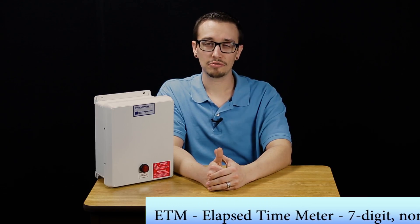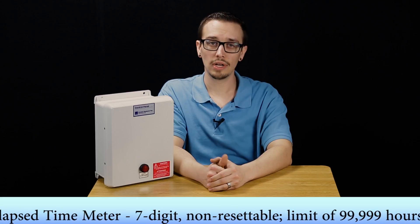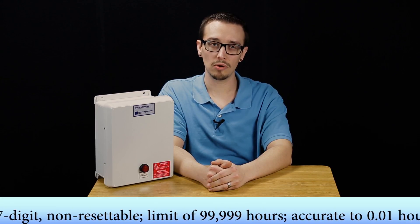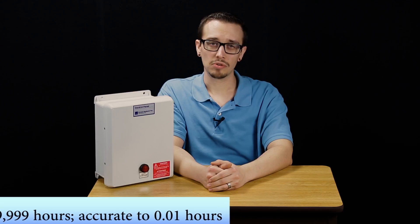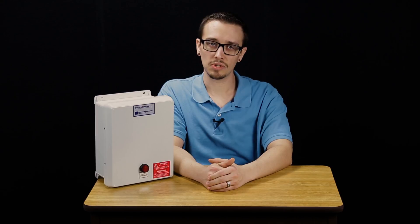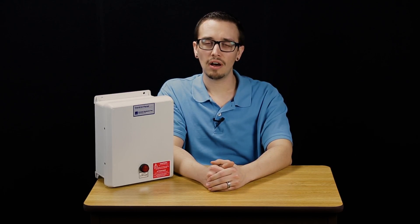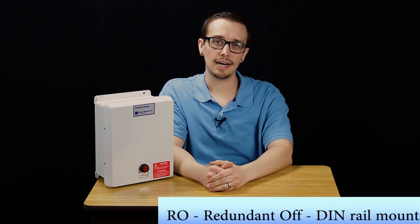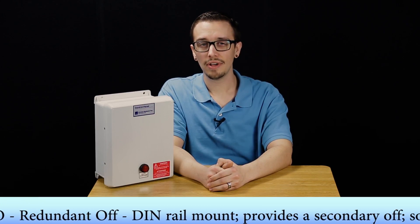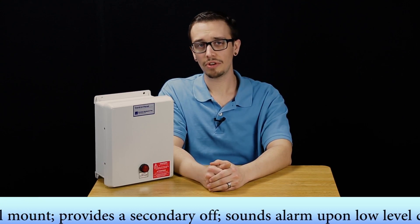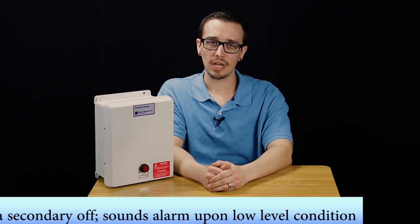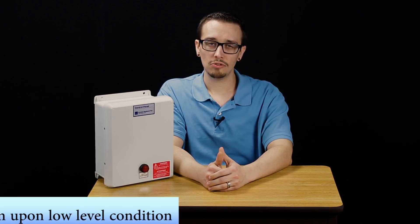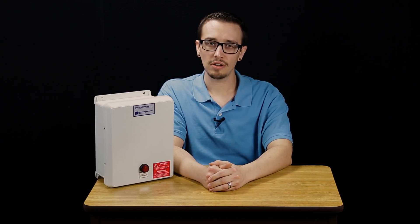We've got the ETM that is an elapsed time meter, extremely useful for keeping track of the totalized run times of the motor and the pump system, which of course can give you some insight and clues as to any problems that arise with the system. The redundant off is an option that is offered with this particular panel as well. The redundant off is considered a second off and in most configurations is going to sound a low level alarm and it is useful in states that require a redundant off.